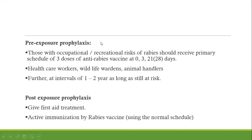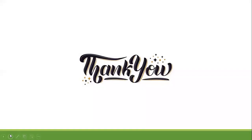Pre-exposure prophylaxis consists of three doses given on days 0, 3, and 21 or 28, and is typically administered every two years or annually. Post-exposure prophylaxis follows the standard five-dose intramuscular injection schedule.